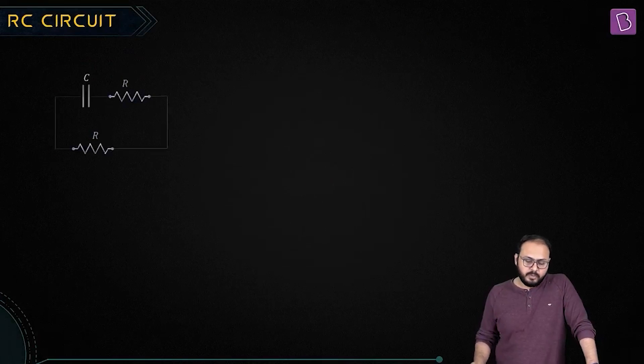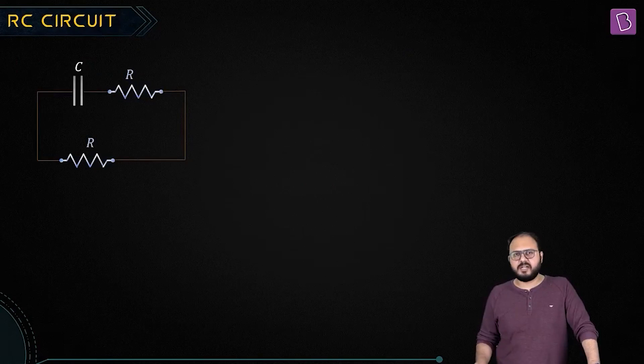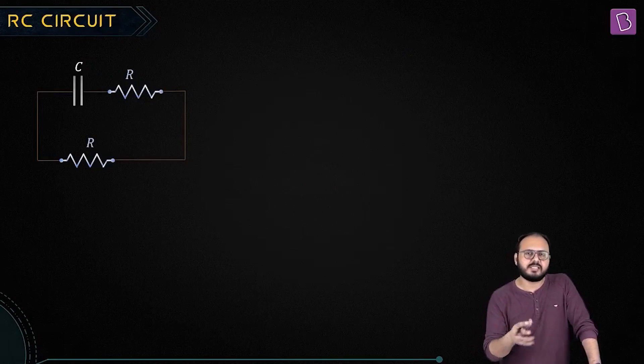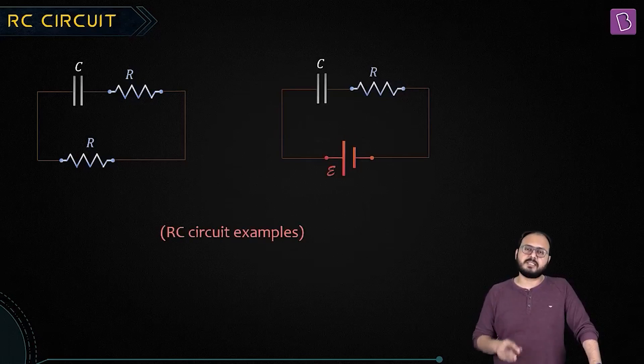RC circuit. What do you acknowledge in this circuit? There is one capacitance, there are two resistors. Is there a battery? No. So a combination of RC circuit is that you can have only resistors and capacitors. Another combination is you can have capacitance, resistance, and battery.